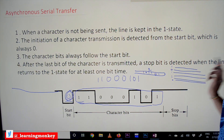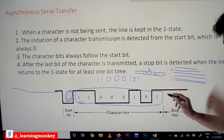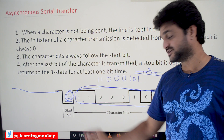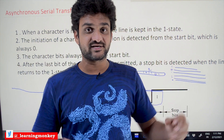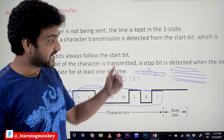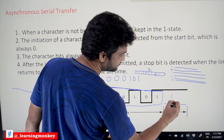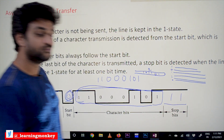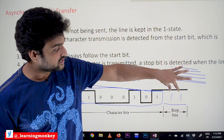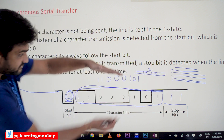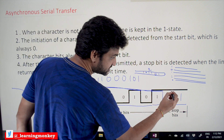After the last bit of the character is transmitted, a stop bit is detected when the line returns to the 1 state for at least one bit time. After receiving the 8 bits at the destination, the destination counts the bits. Once all 8 character bits have been received, the stop bits follow. In most cases there are two stop bits, and they are always assigned as logic 1. After receiving the 8 bits, the receiver checks for the stop bits.